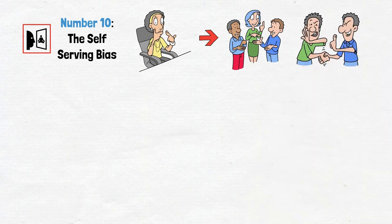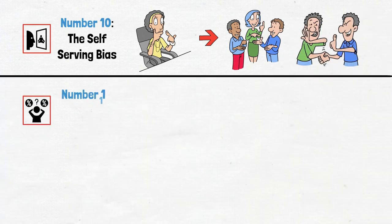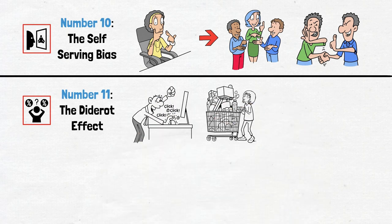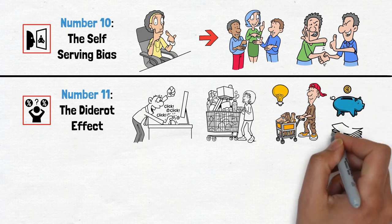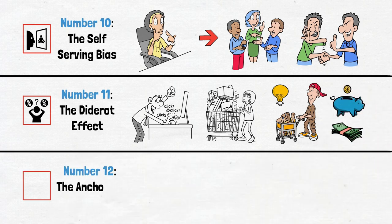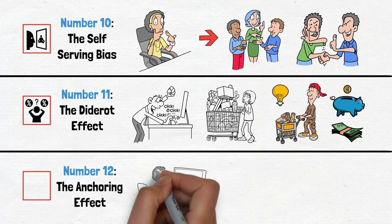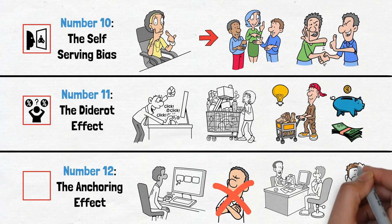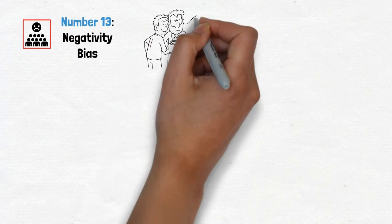Number 11, the Diderot effect. One purchase leading to another. That's the Diderot effect in action. Stay mindful of your spending habits and avoid unnecessary splurges. Number 12, the anchoring effect. Your first impression can shape your subsequent thinking. Be aware of the anchoring effect and make decisions based on facts, not biases. Number 13, negativity bias. Why do we dwell on the negative? It's time to shift our perspective and focus on the positive aspects of life.